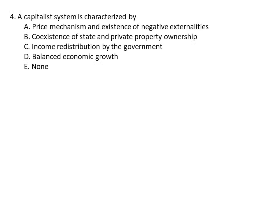Question four: A capitalist system is characterized by what? A) The price mechanism and the existence of negative externalities, B) Co-existence of state and private property ownership, C) Income distribution by government, D) Balanced economic growth, E) None. The answer should be A, the price mechanism and the existence of negative externalities.